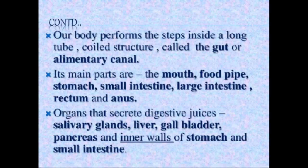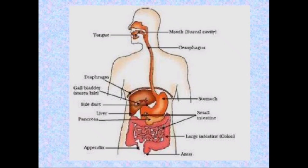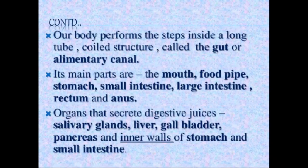The main parts of the alimentary canal are: mouth, tongue, oesophagus, stomach, small intestine, large intestine, and anus. There are also organs that secrete digestive juices — just as amoeba and multicellular organisms secrete digestive juices, our body also secretes digestive juices. These are secreted by the salivary glands — the glands present in your mouth where saliva is produced.